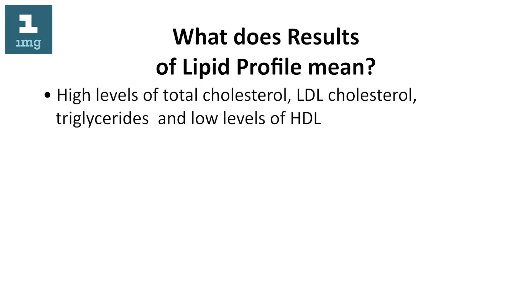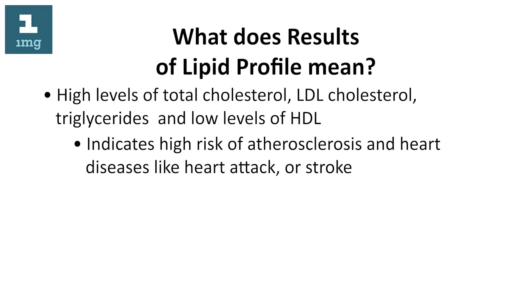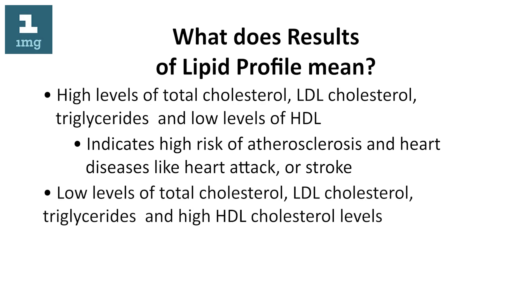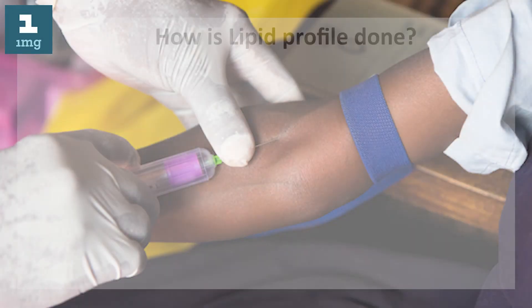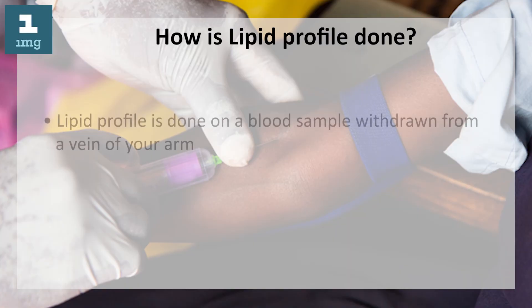What do the results of a lipid profile mean? High levels of total cholesterol, LDL cholesterol, and triglycerides, along with low levels of HDL, indicate a high risk of atherosclerosis and heart diseases like heart attack or stroke. Low levels of total cholesterol, LDL cholesterol, and triglycerides, along with high HDL cholesterol levels, indicate a low risk of atherosclerosis and heart diseases.